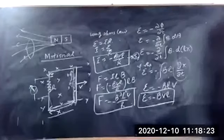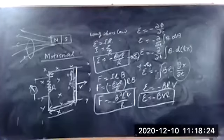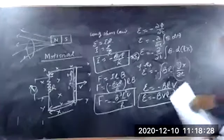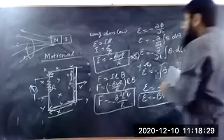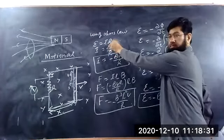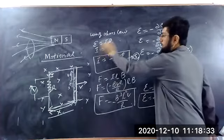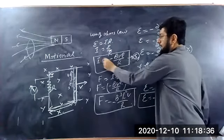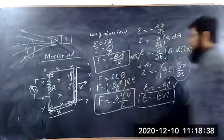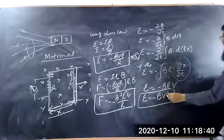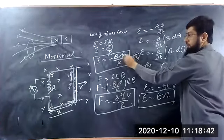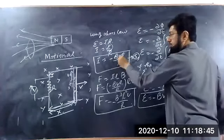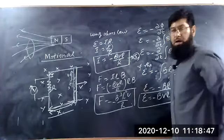Using Ohm's law, E is equal to IR. So I is equal to E upon R by using cross multiplication. I is equal to E, which is the EMF, which is equal to BVL — we have substituted the value of BVL. So the current is equal to minus BVL over R.